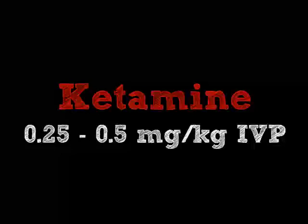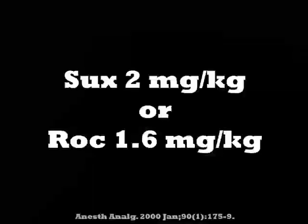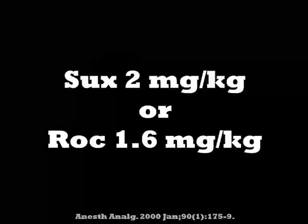For my paralytic, I will either give a very high dose of succinylcholine — 2 milligrams per kilogram — or a very high dose of rocuronium. Even higher than I normally use in the regular patient intubation, which is 1.2 milligrams per kilogram; I'm actually going to give 1.6 milligrams per kilogram of rocuronium.